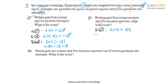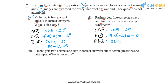Then for the 5 incorrect answers, her score will be 5 incorrect answers into minus 2 marks per incorrect answer, or minus 10. To calculate Reshma's total score, we simply add these two scores. The total will be 25 plus minus 10, which we can write as 25 minus 10, or 15. So Reshma's total score is 15.